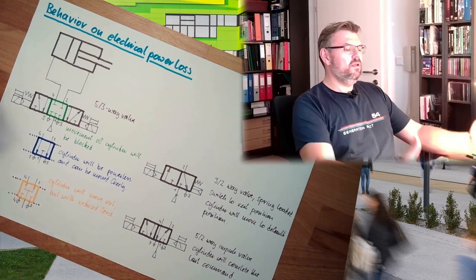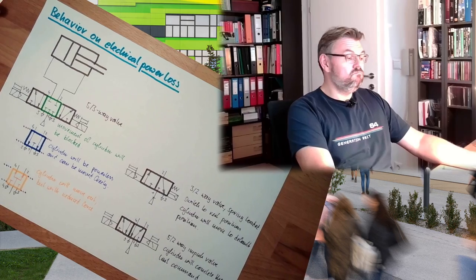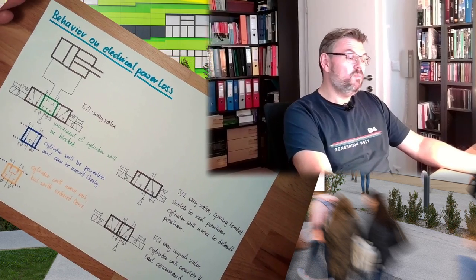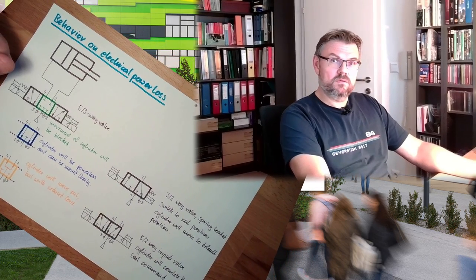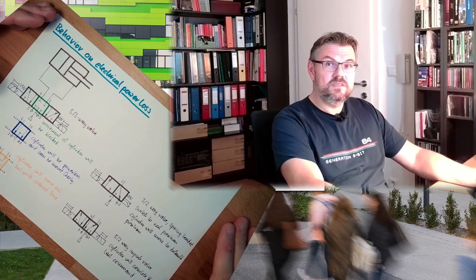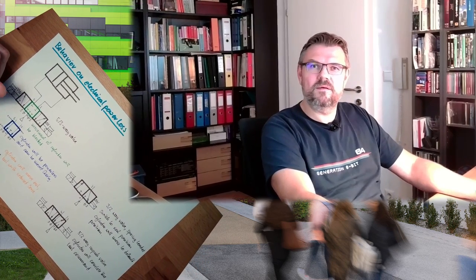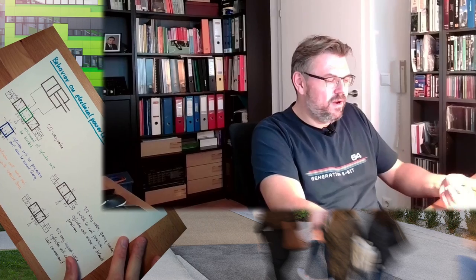So this is how the pneumatic side of the valve is determining what behavior we have on electrical power loss. You should consider this, you have to consider this in order to produce a safe control system. There's a reason why they produce different types. Use them wisely.